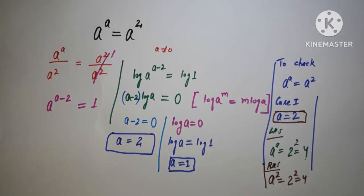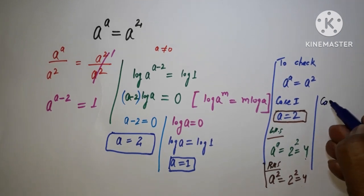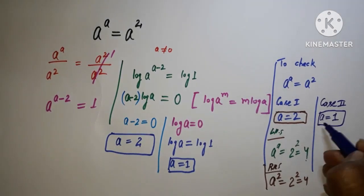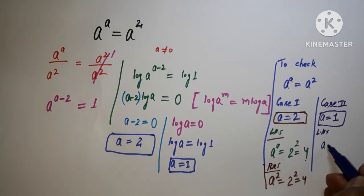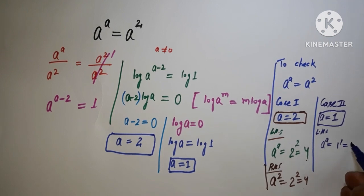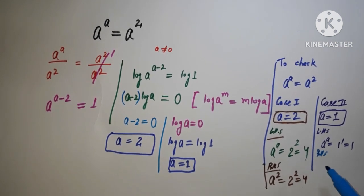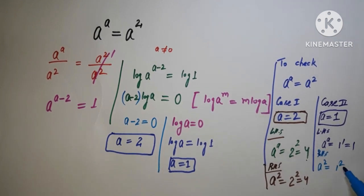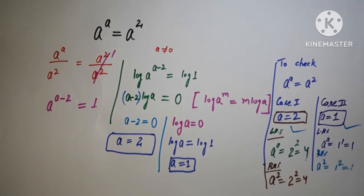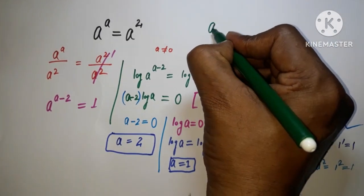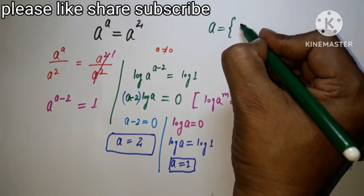For case 2, when a equals 1: on the LHS we have 1 to the power 1, which equals 1. On the RHS we have 1 squared, which equals 1. LHS equals RHS, so this also satisfies the equation. We have two values: a equals 1 and a equals 2.